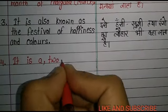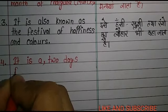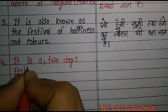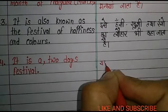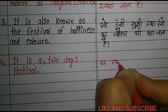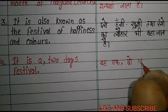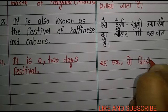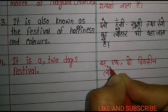Fourth line: It is a two days festival. यह एक दो दिवसी त्योहार है।